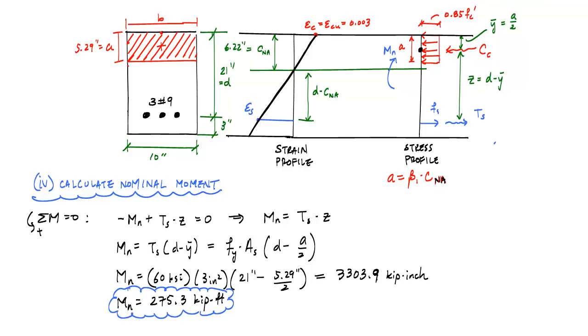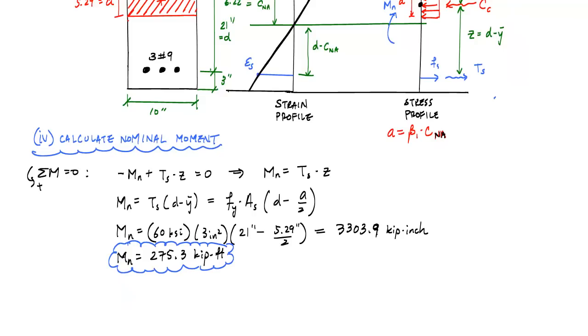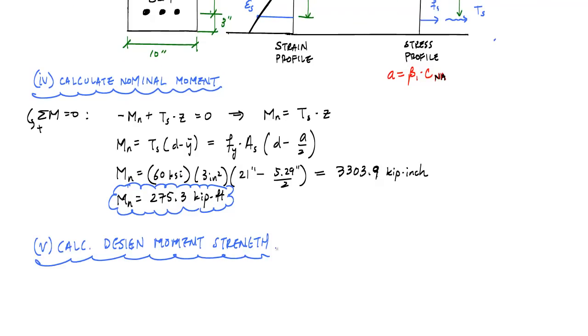And last but not least, what we have left is to calculate the design moment because we've already done all the work. And this design moment strength would just be putting phi and MN together. So, phi times MN, which is just 0.9 times 275.3 kip feet, and this is equal to 247.8 kip feet. We're done. All right, so hopefully that was useful and very detailed for all of you who are new to reinforced concrete. For those of you who are looking at this for review, hopefully you just fast forwarded to the parts you needed. See ya.